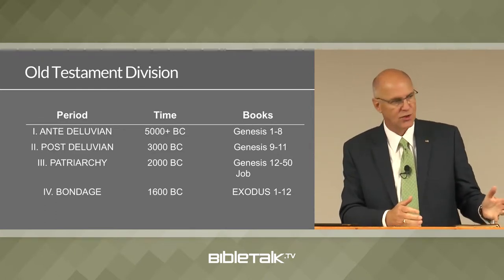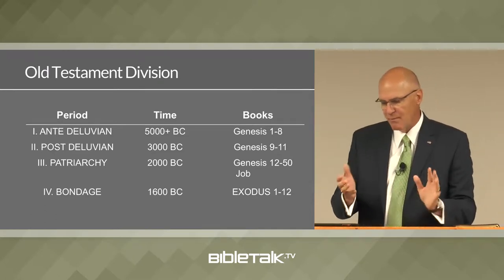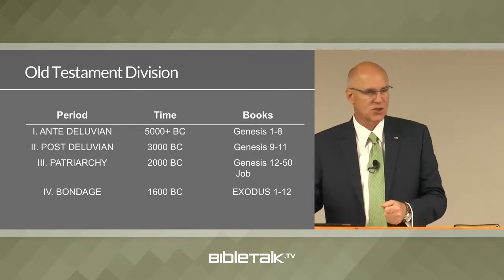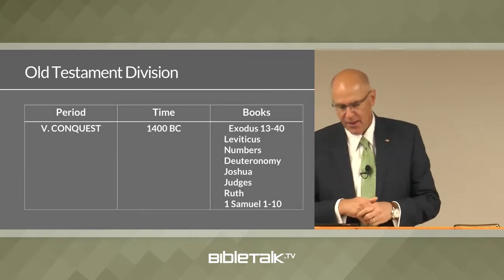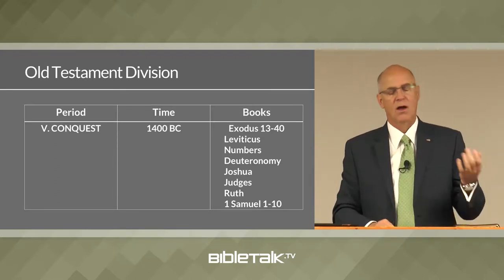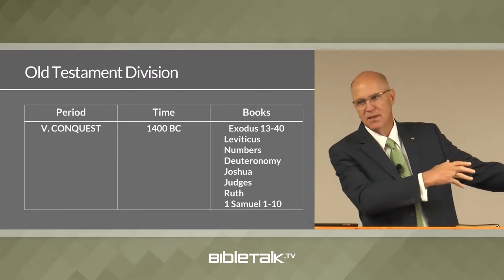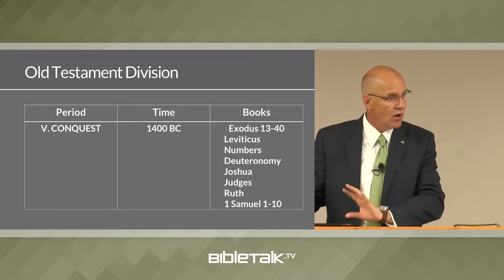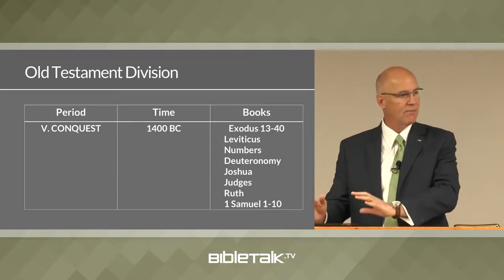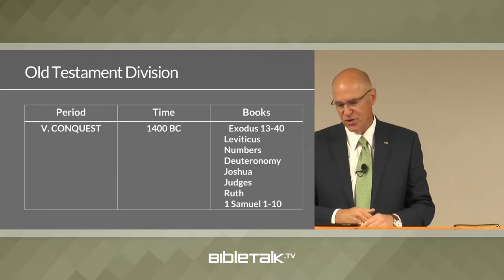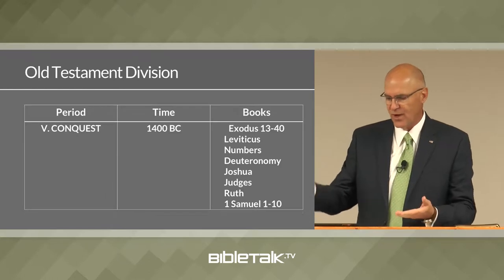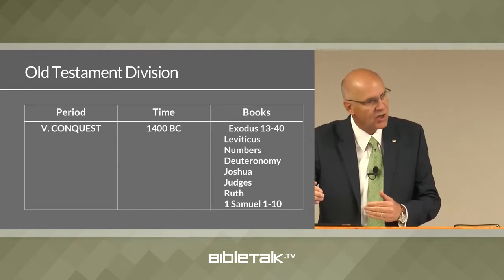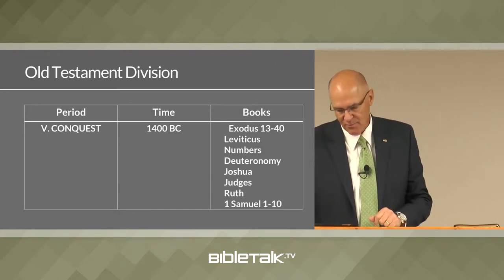The period of bondage, when the Israelites were enslaved in Egypt around 1,600 B.C., is covered by Exodus chapters 1 to 12. Then the period of conquest, around 1,400 B.C., when Moses leads the people into the promised land and they begin to conquer and settle it by tribes. The books covering that period are Exodus 13 to 40, Leviticus, Numbers, Deuteronomy, Joshua, Judges, Ruth, and First Samuel chapters 1 to 10.